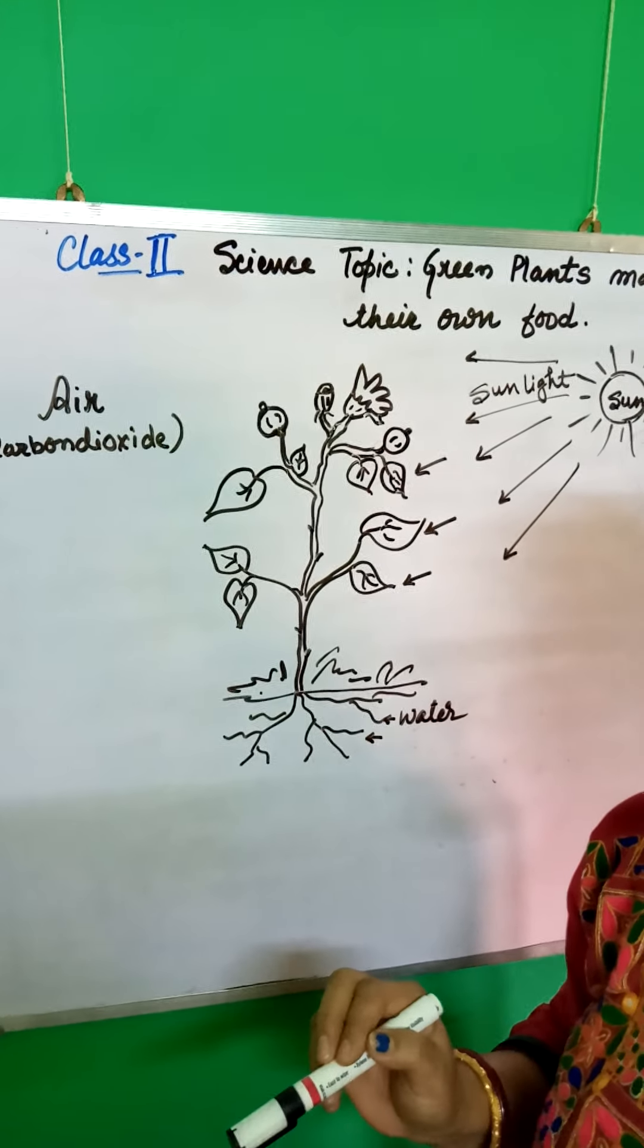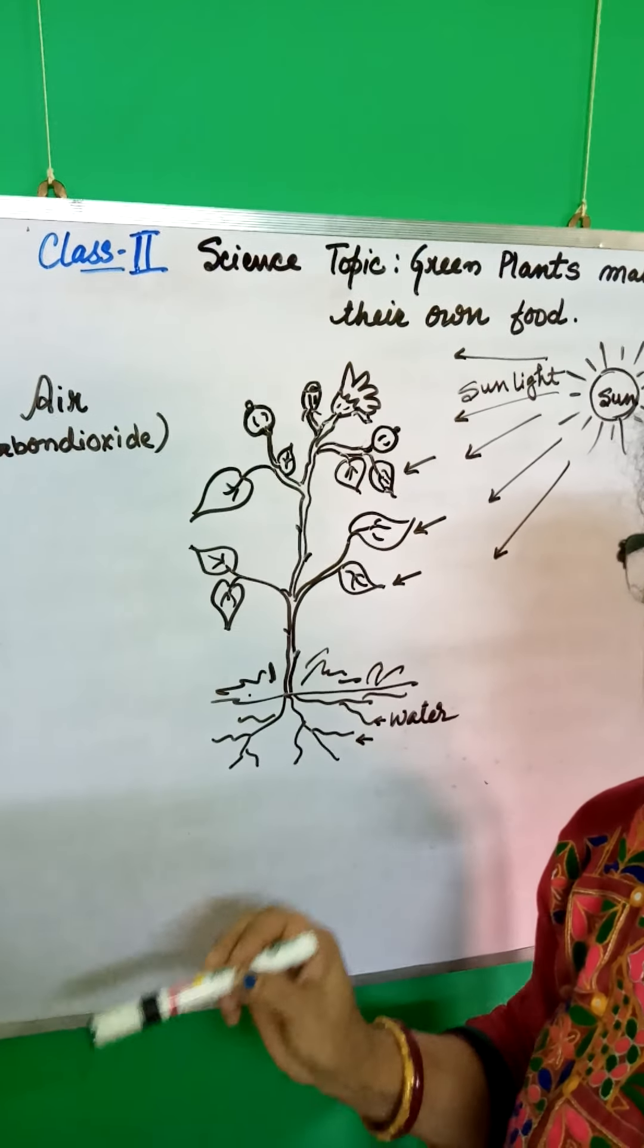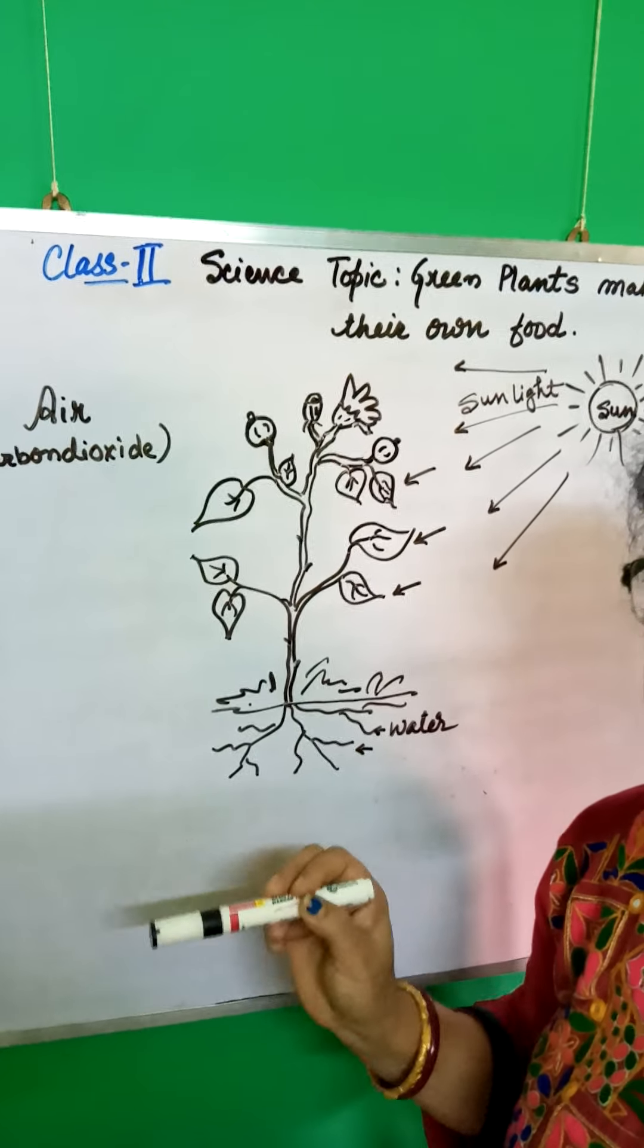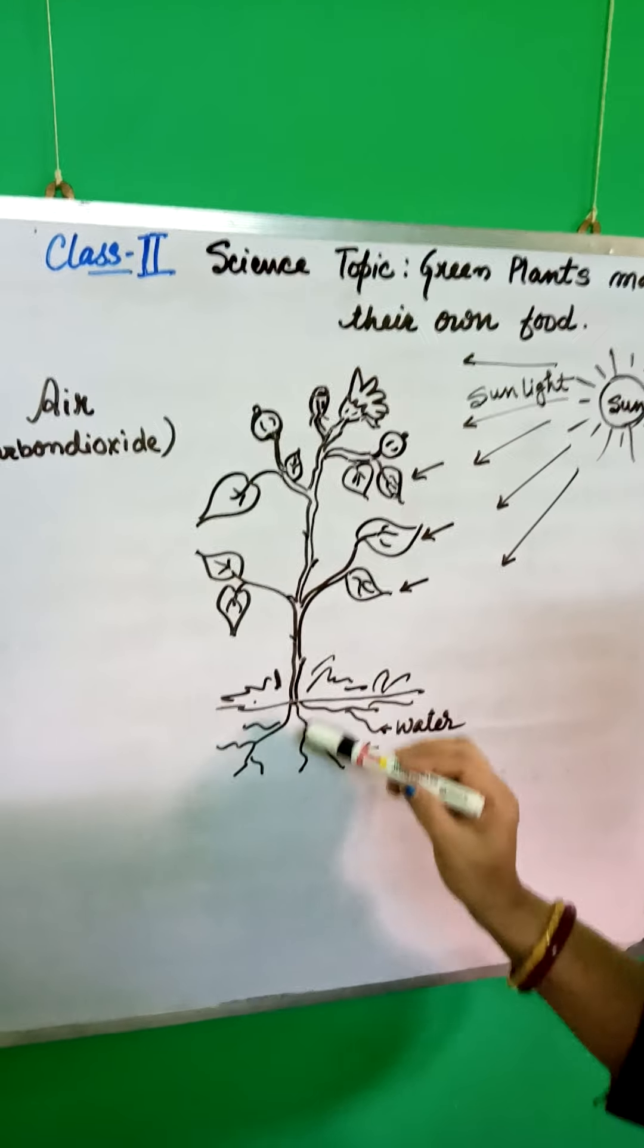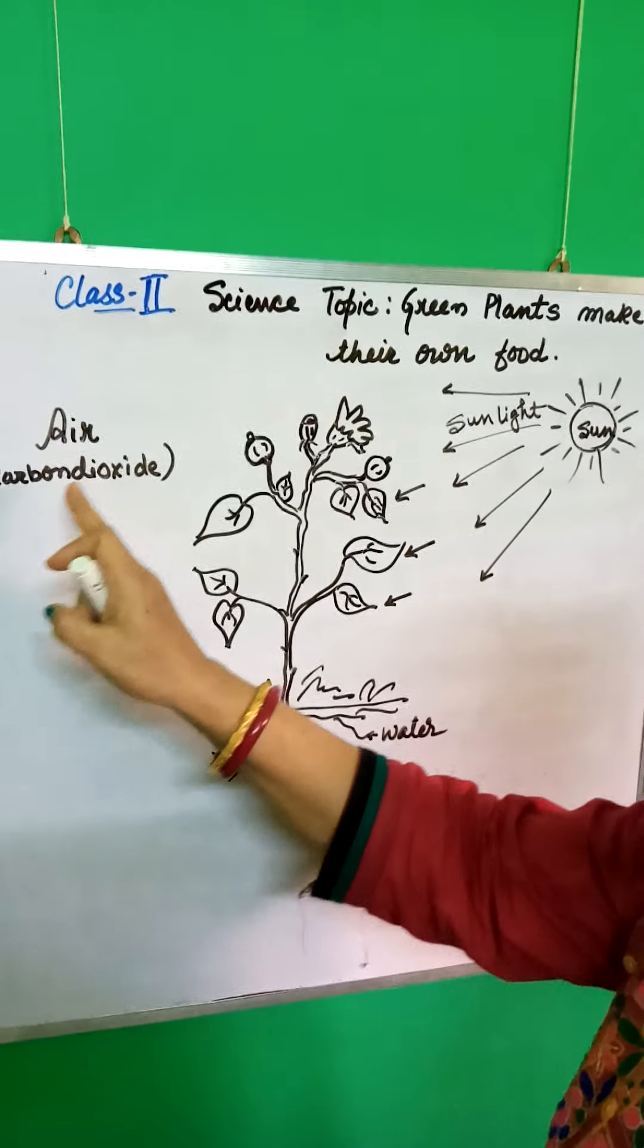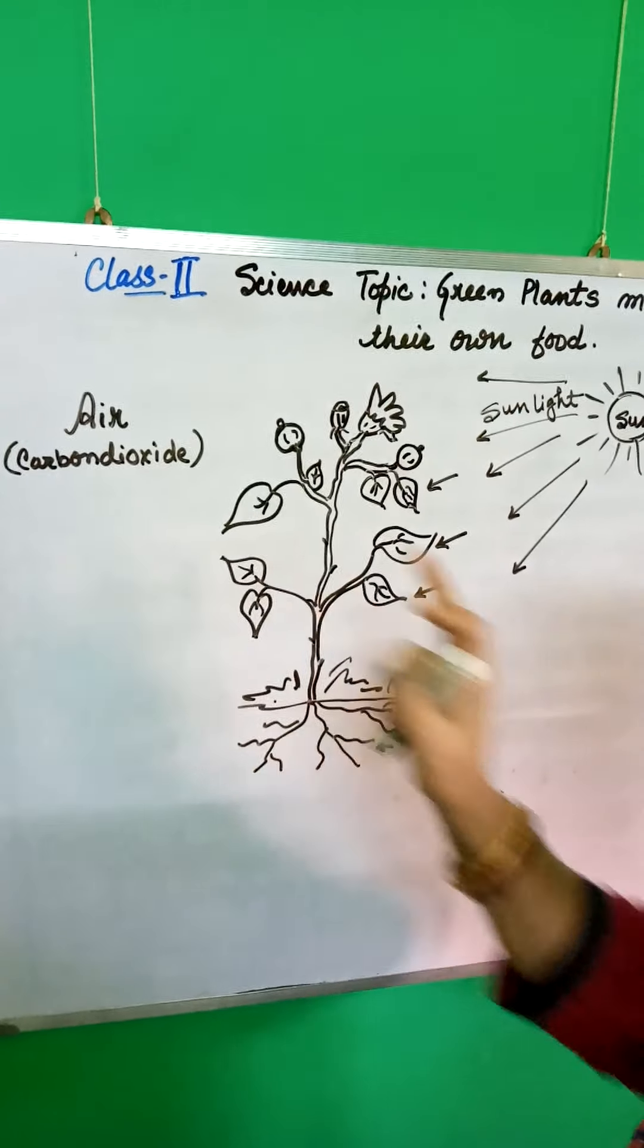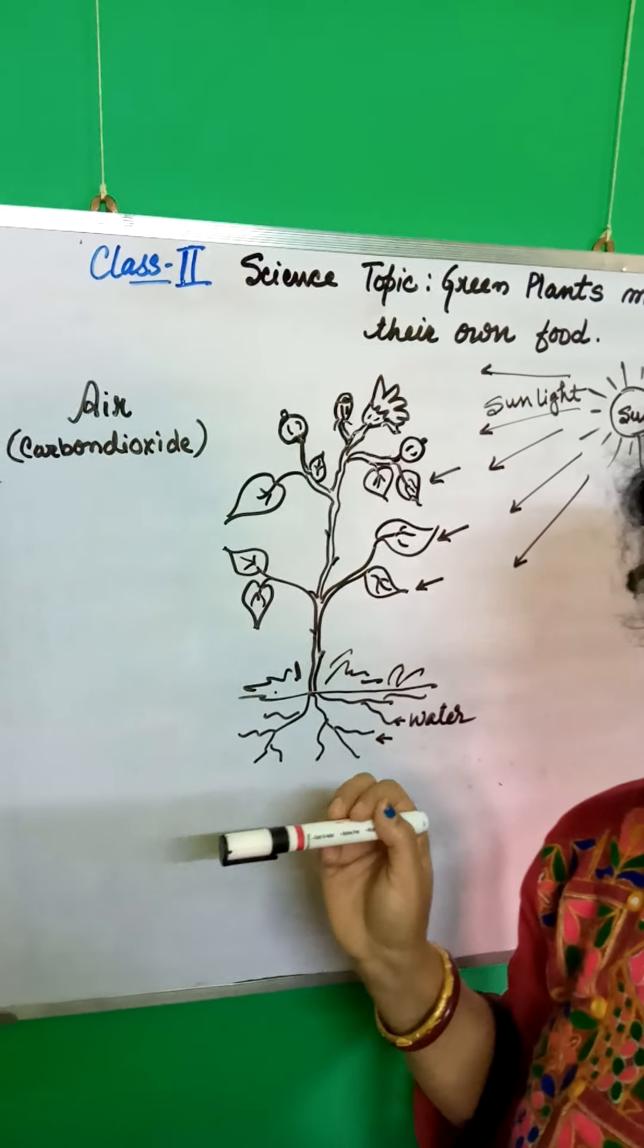In water, what they get from water, they get minerals and different types of nutrition. Then, with the help of sunlight, air, that is carbon dioxide and water, the plants make their own food.